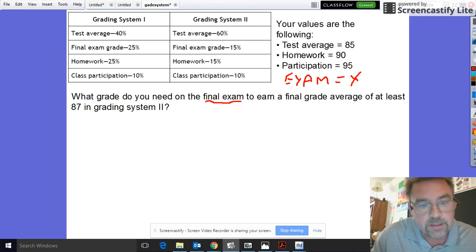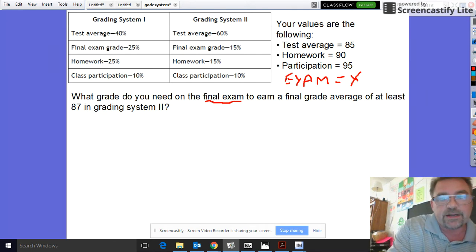You pretty much set up the same system the way you did before. You're gonna take your test average right here, 85, and you're going to multiply by its percentage which is 0.6.